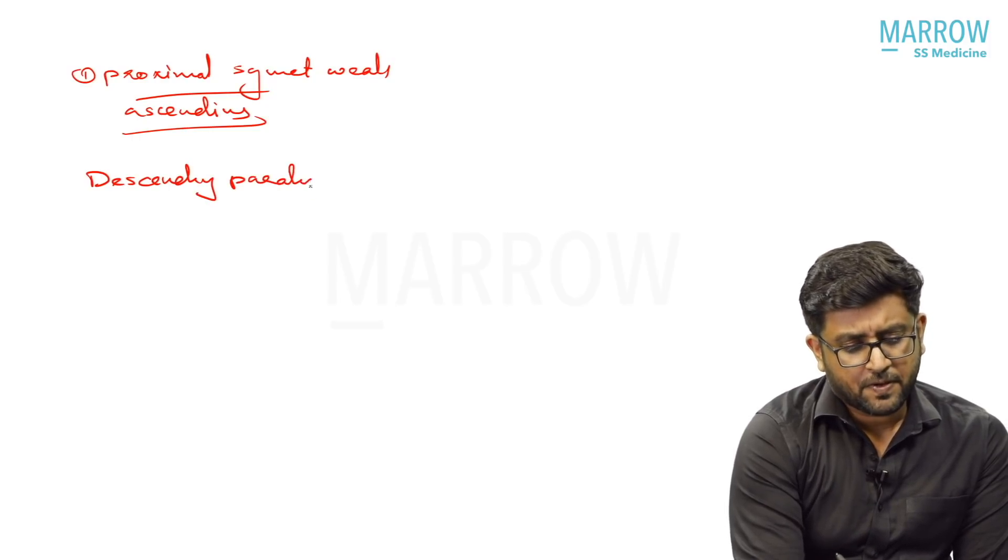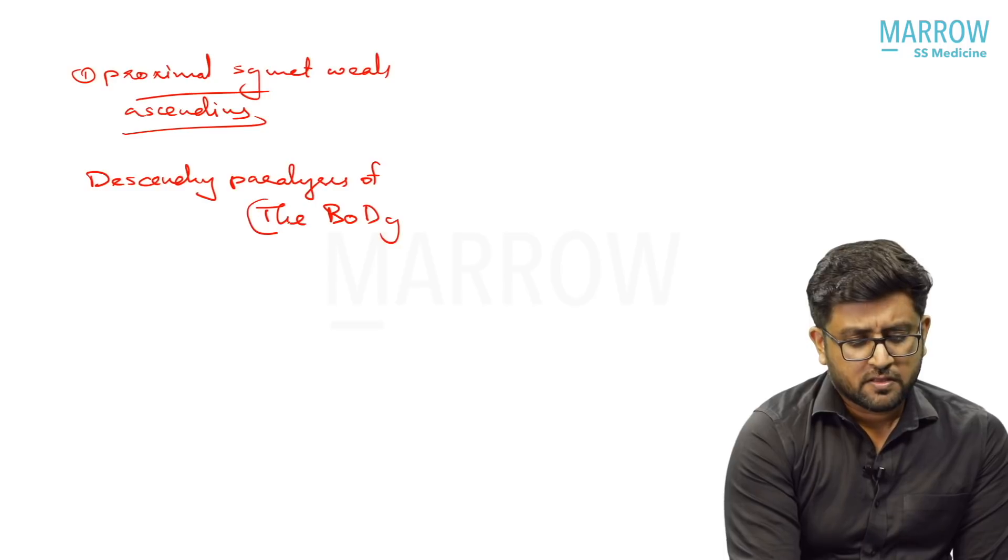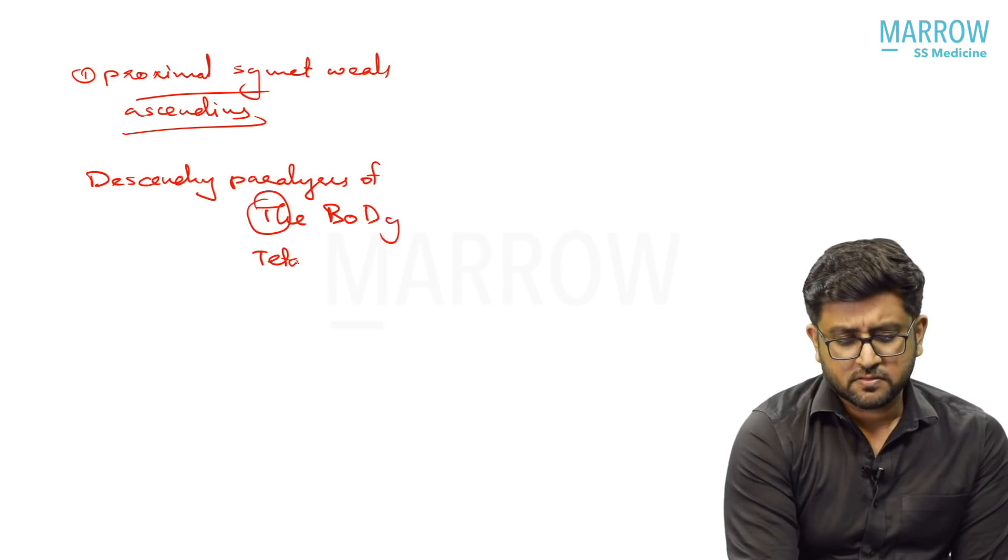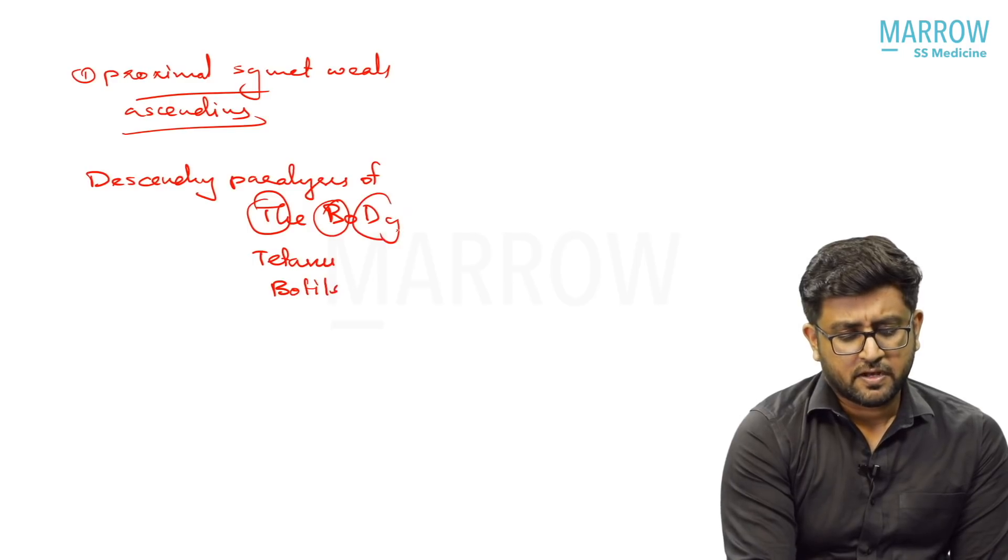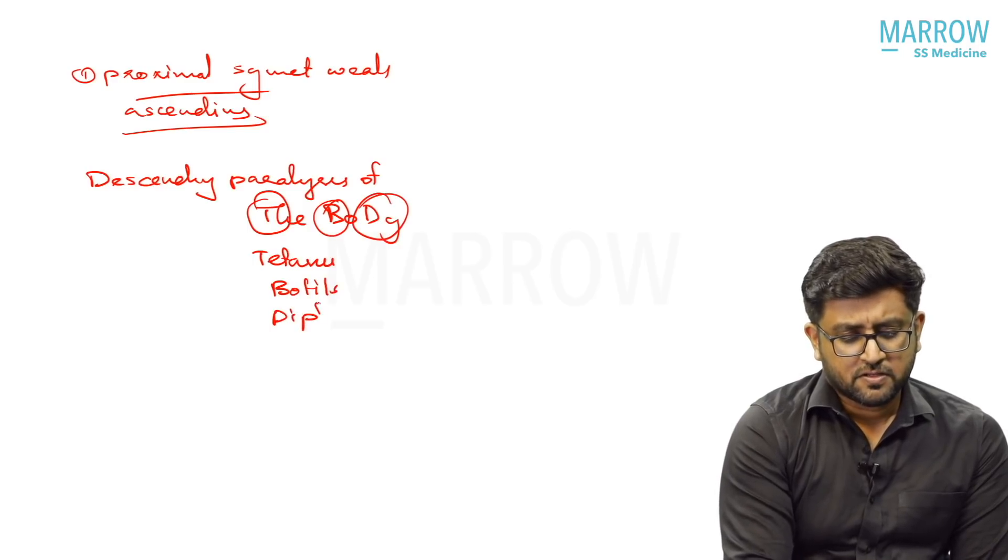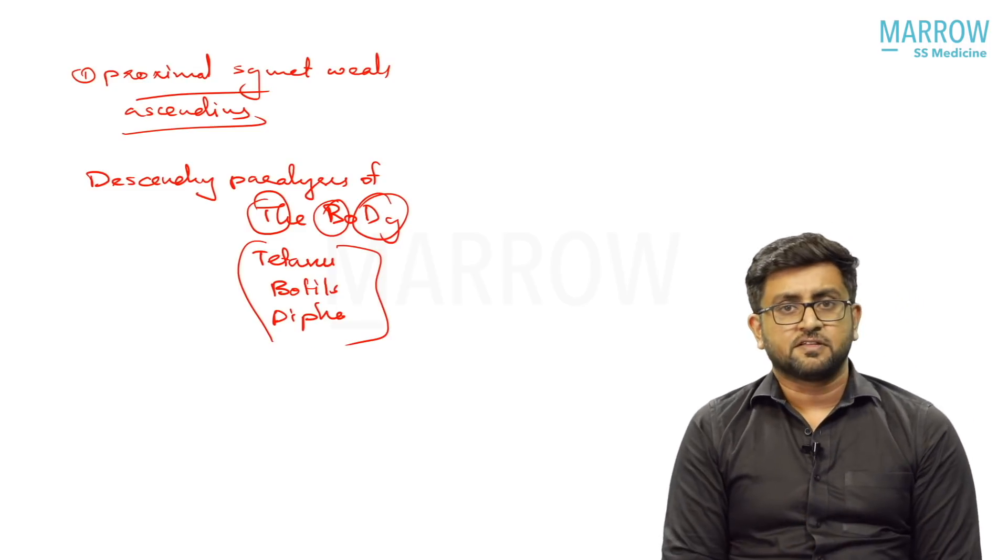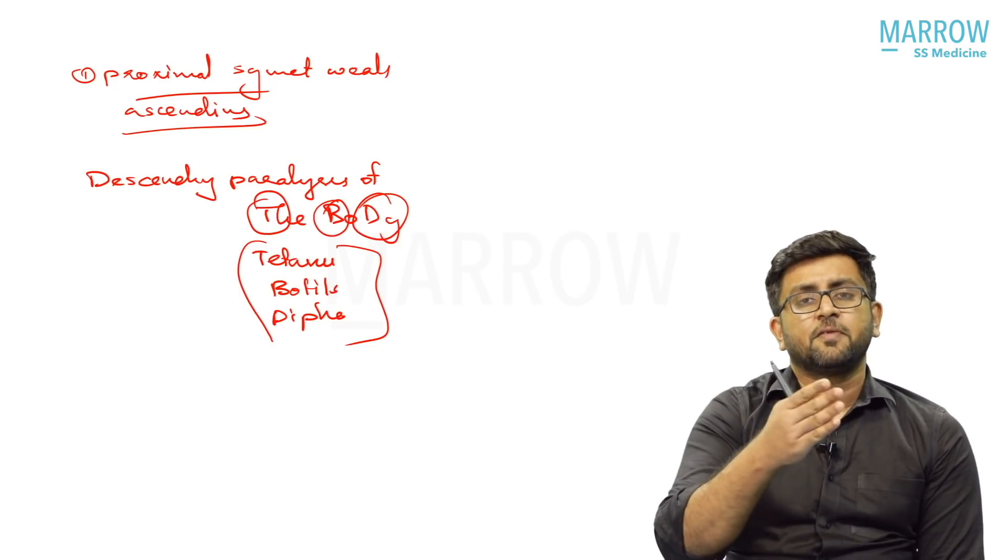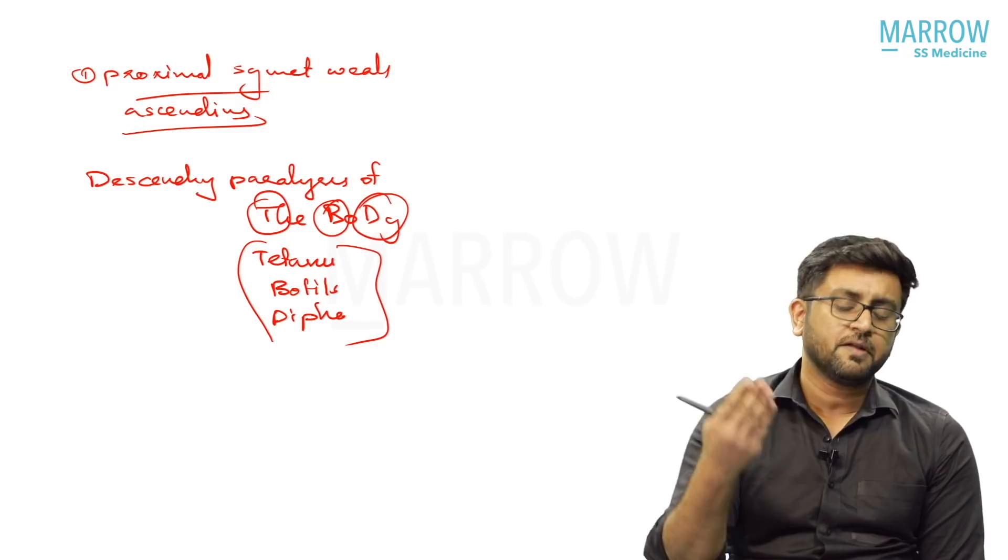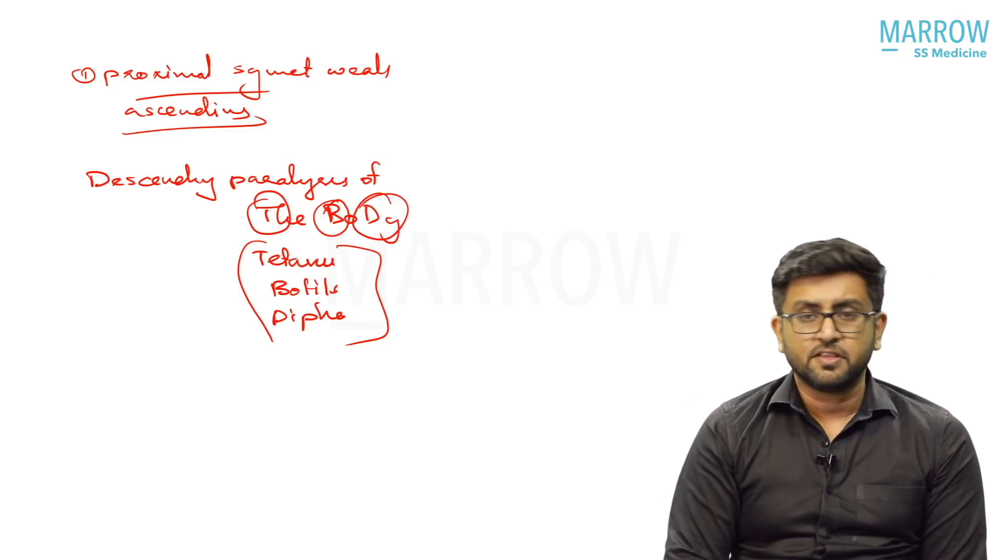Descending paralysis of body, remember: T for tetanus, B for botulism, and D for diphtheria. These are the things which present with descending paralysis of body. Remaining almost everything presents with ascending paralysis of body. You can remember - descending paralysis of the body means tetanus, botulism, and diphtheria. These are only three things which present descending paralysis.